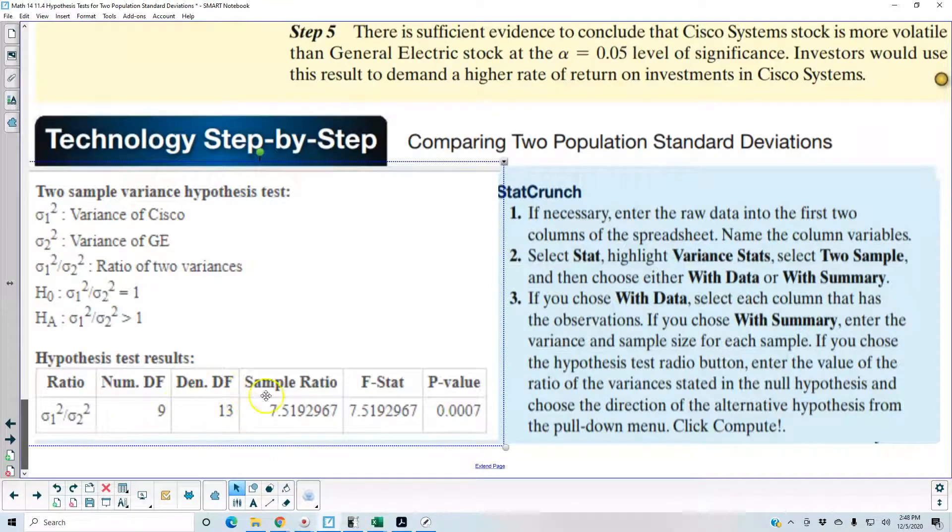The denominator degrees of freedom is thirteen. We have our F statistic which is 7.52, and we can see that we get a p-value of 0.0007.